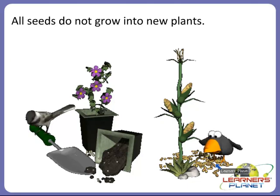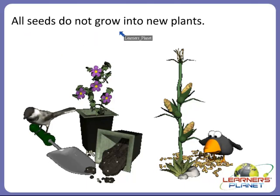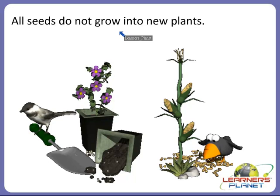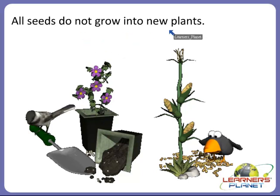After the seed coat bursts, a baby plant grows from inside the seed into a new big plant. You will be amazed to know that all seeds do not grow into new plants. As we discussed, new plants can grow not only from seeds but also from other parts of the plant such as stem, root, and leaf.